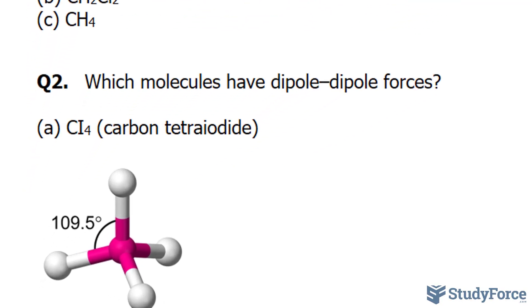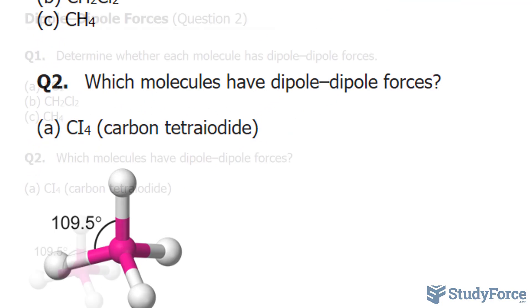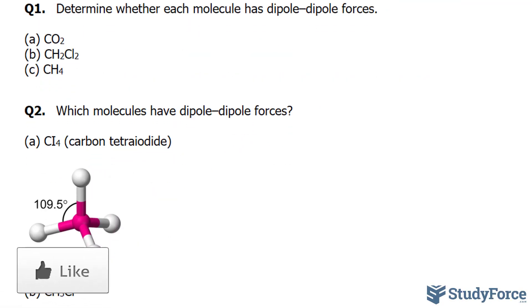Let's begin with question A. We have CI4, or carbon tetraiodide. Underneath, you'll see an illustration of what the molecule looks like. It's assumed that when you do these types of problems, you can draw a Lewis structure of the molecule and determine what type of shape it is according to VSEPR theory.